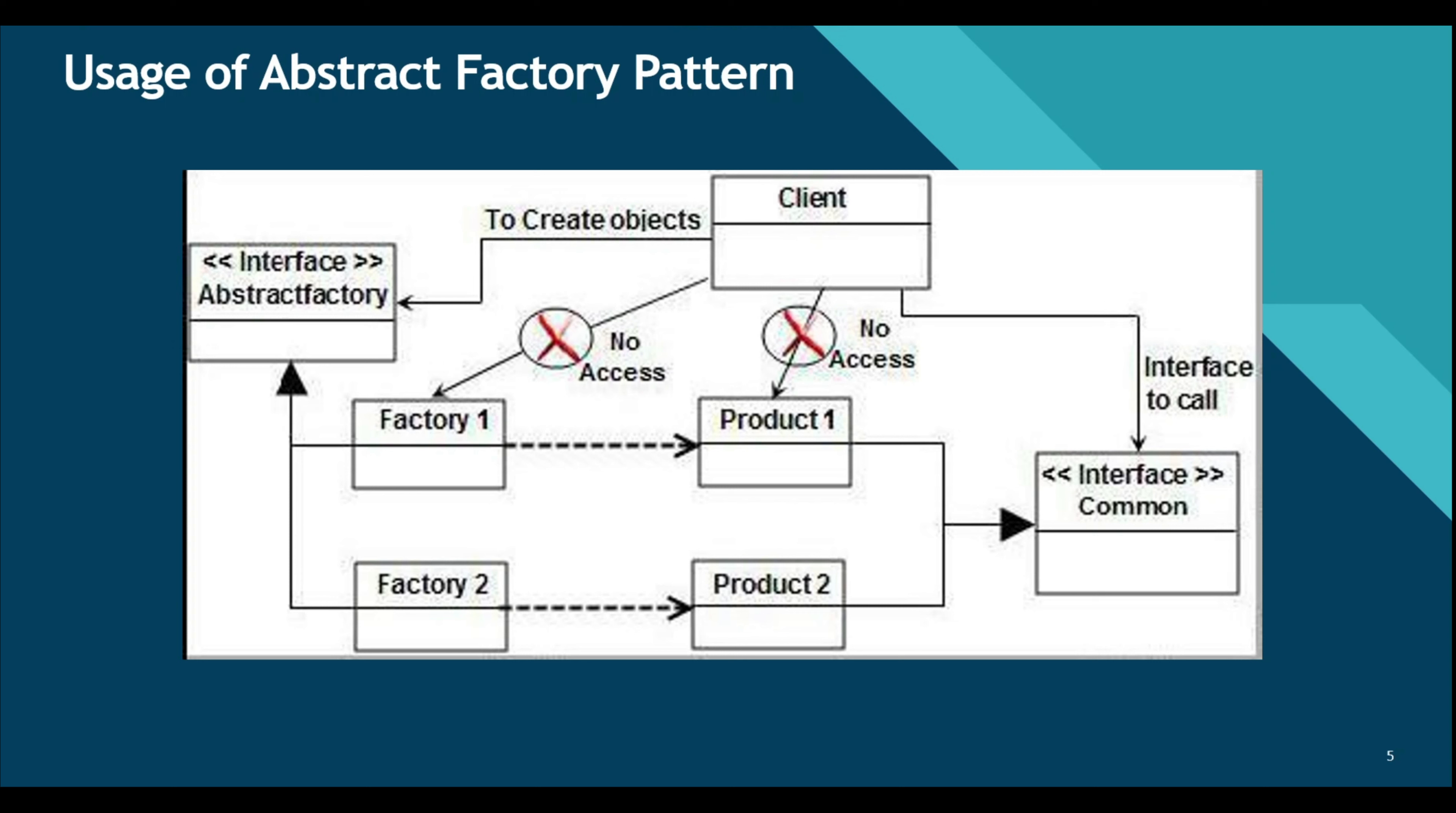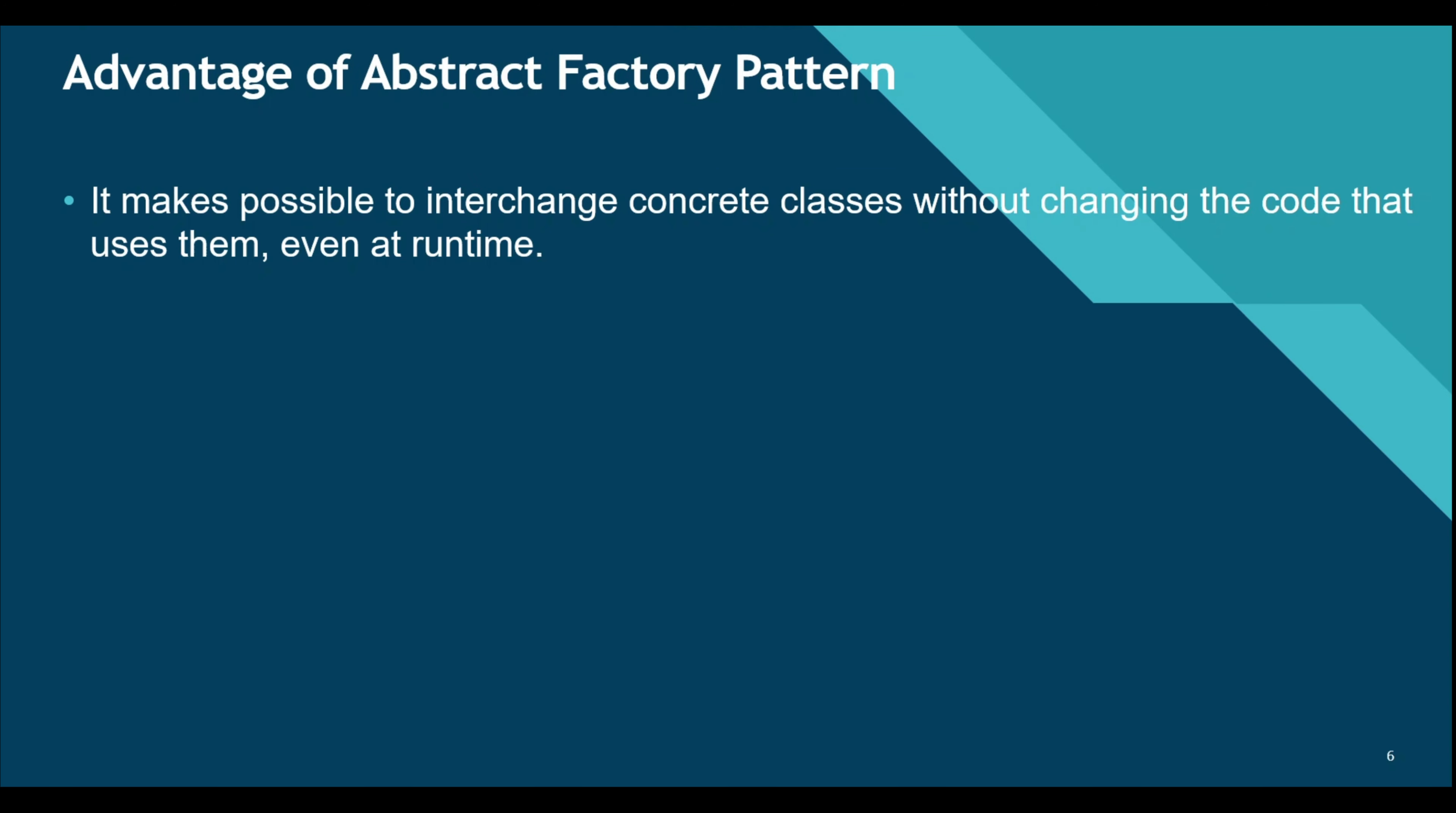The abstract factory is often employed when there is a need to use different sets of objects and where the objects could be added or changed during the lifetime of an application or at runtime. So what is the advantage we get from abstract factory pattern? The use of this pattern makes it possible to interchange concrete classes without changing the code that uses them, even at runtime.